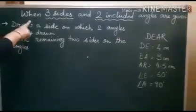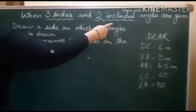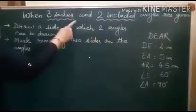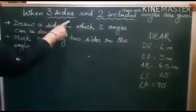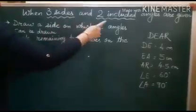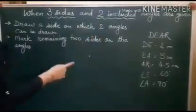The last type of construction is when 3 sides and 2 included angles are given to you. This is one of the easiest constructions to make. 3 sides will be given and 2 included angles. Included angles means those angles will be in between those 3 sides.